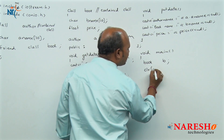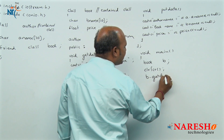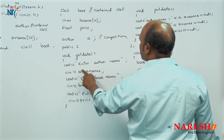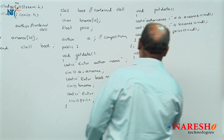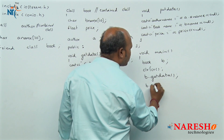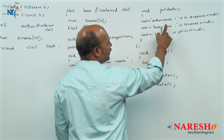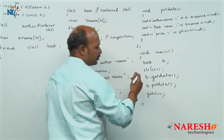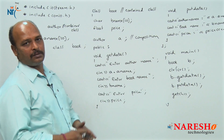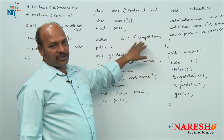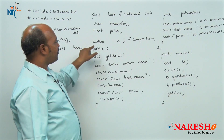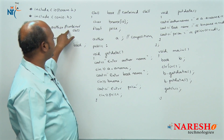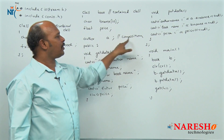Next, screen clear, then b.get_data() — this invokes the get_data function, which reads other name, book name, and price. Next, b.put_data() — this prints other name, book name, and price. Then getch() and the program is closed. This is the perfect example for composition because one class object is completely defined inside another class.